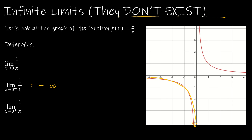If I'm looking from the right-hand side — that's this portion of the graph — as I approach 0, the values are getting greater and greater. So this limit would be infinity. But in actuality, it doesn't exist. And we already know that the limit as x approaches 0 does not exist, because the limit approaches different values from each side of x equals 0.